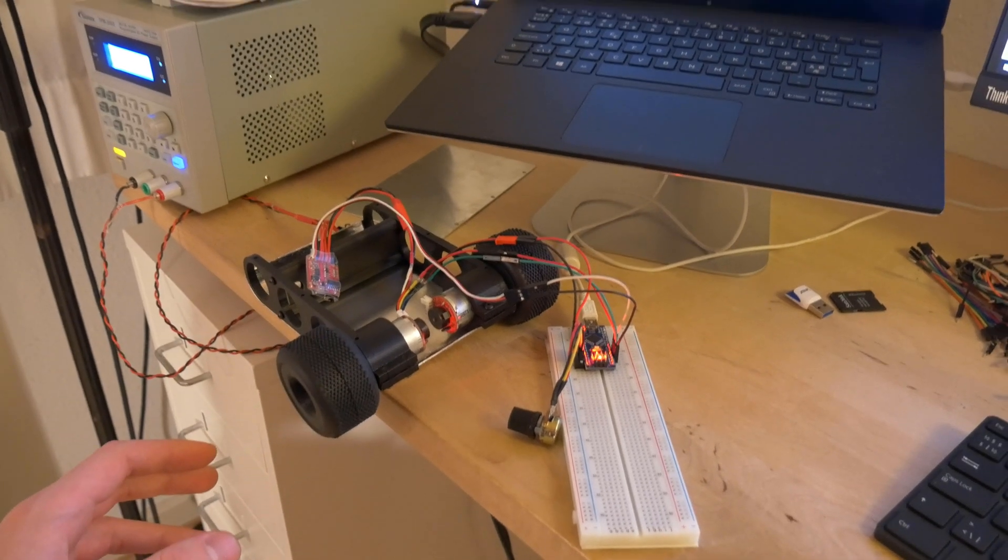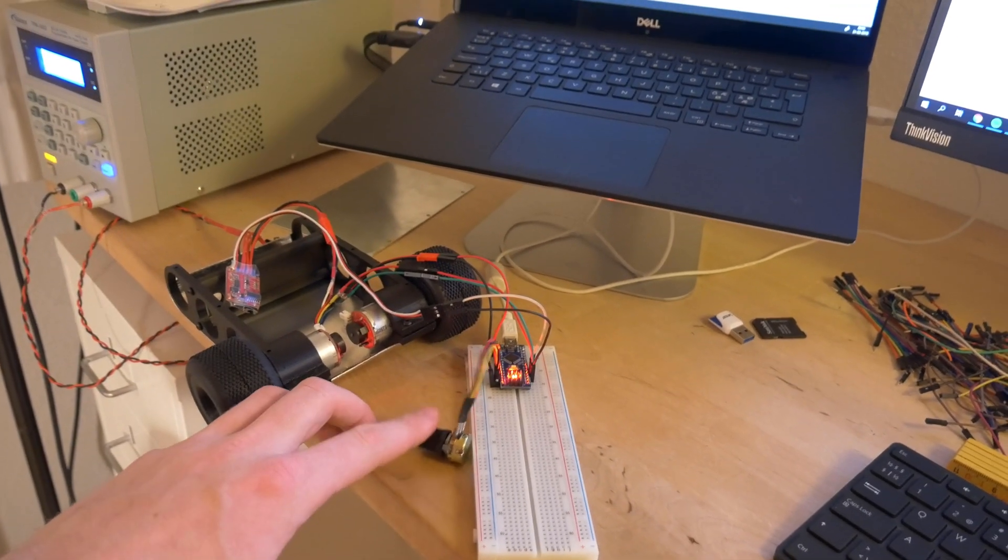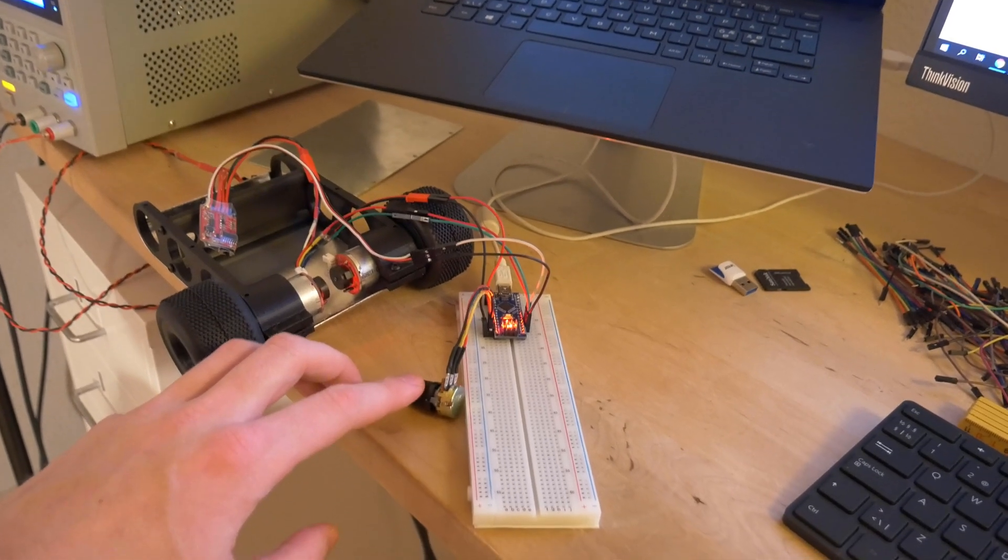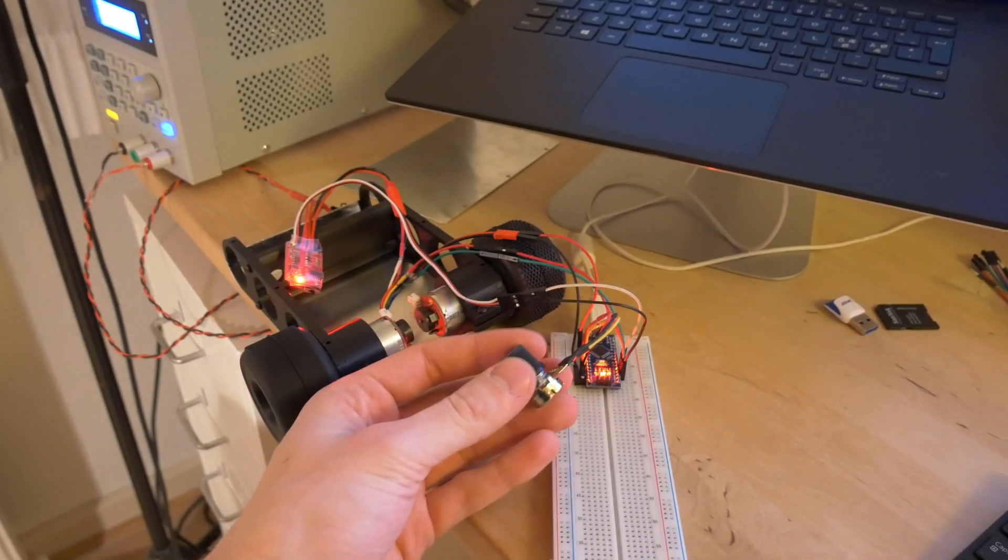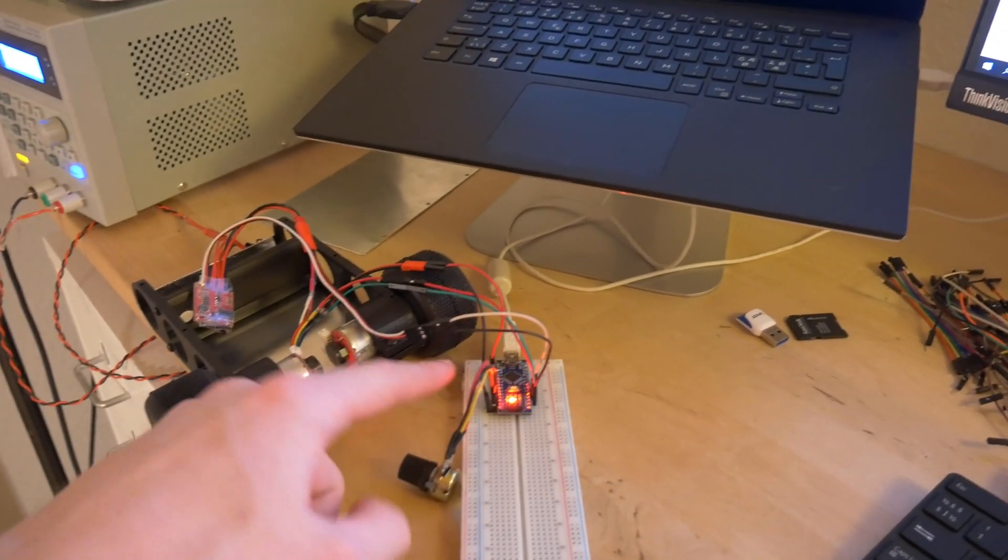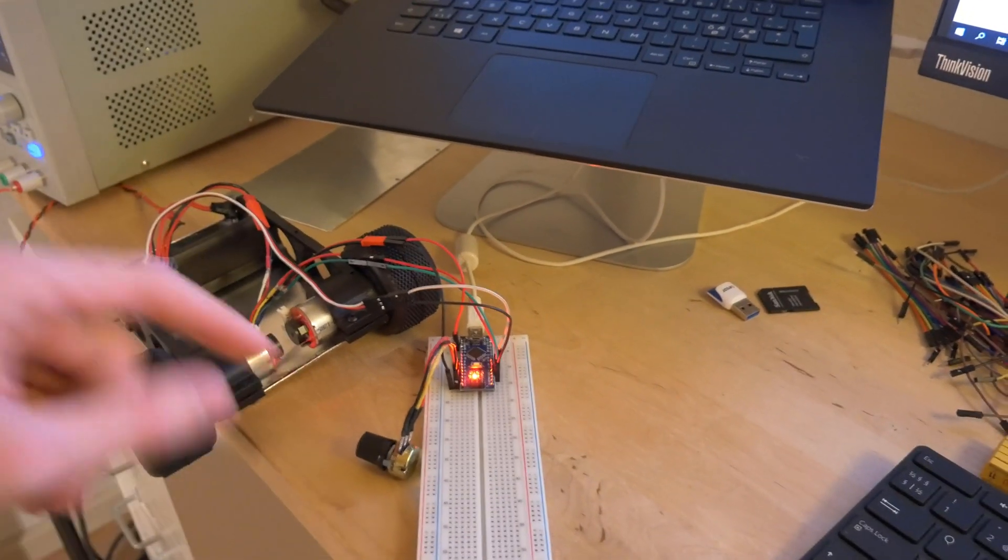The goal is now to set up a PID controller. So instead of me setting the PWM with the potentiometer, I want to select the set point. And then the Arduino, the encoder, and the ESC will try to match that set point.